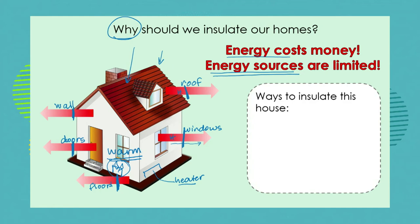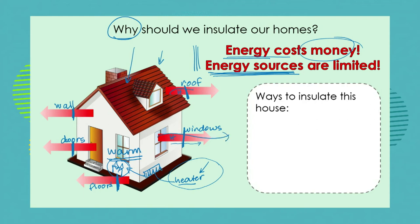But remember there are two problems here. Energy costs money - it costs money to use the electricity to keep our heater working, and it costs money to purchase wood for our fire. We also need to remember the bigger picture: energy sources are limited. There is not an endless supply of coal to make electricity to keep our heater running. So we need to make sure we don't waste money by heating our house and just allowing all that heat energy to escape to the environment. We need to find ways to insulate our home.